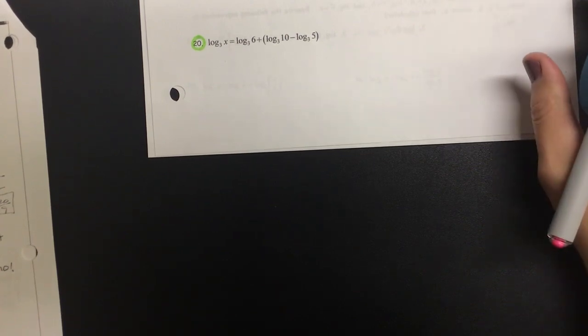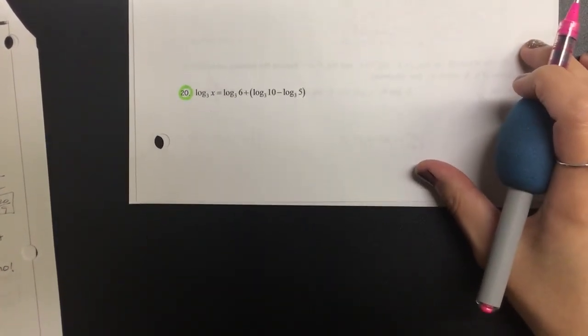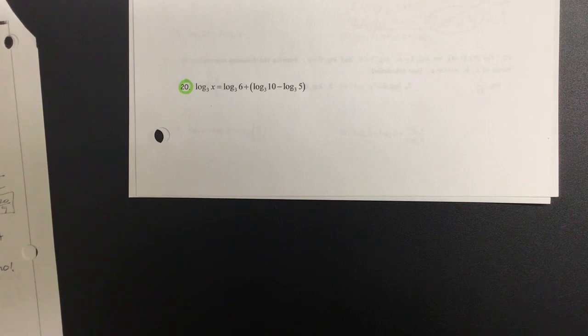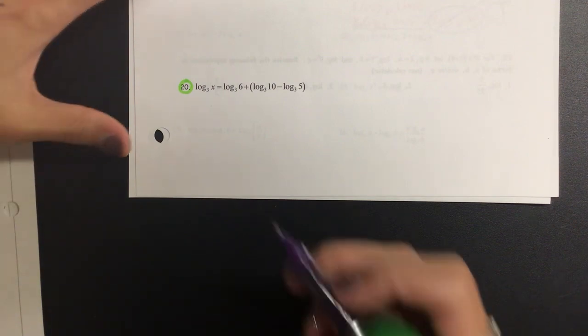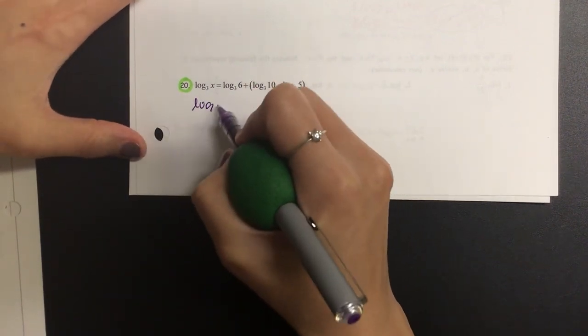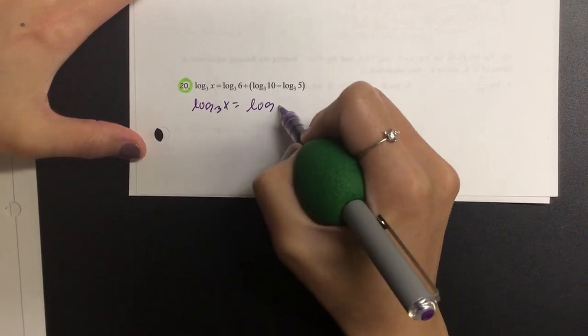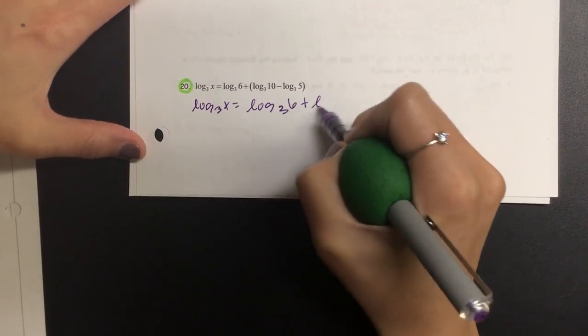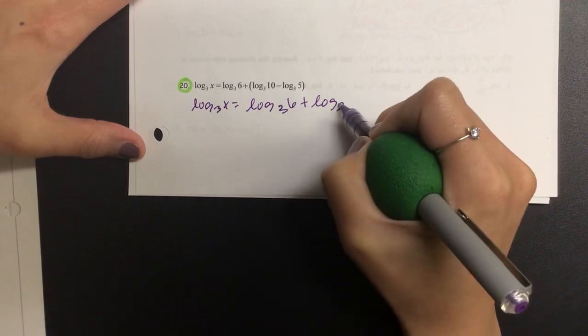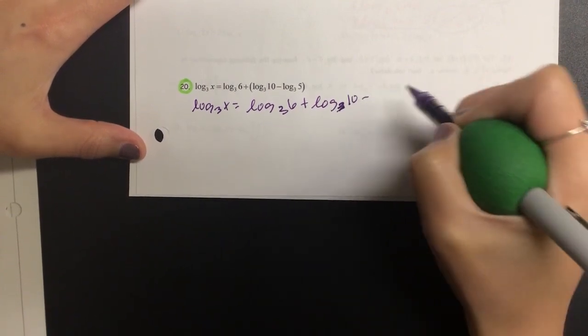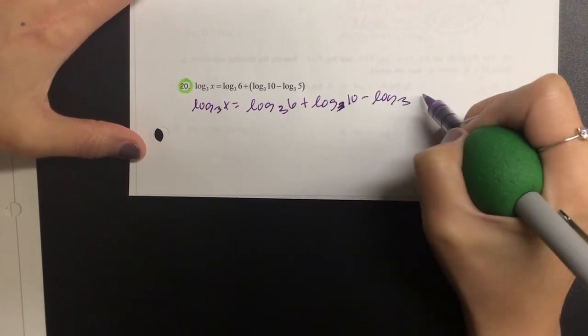Okay number 20. Let's go ahead and condense this first. When condensing I think I'm going to take out the parentheses first. We have log base 3 of x is equal to log base 3 of 6 plus log base 3 of 10 minus log base 3 of 5.